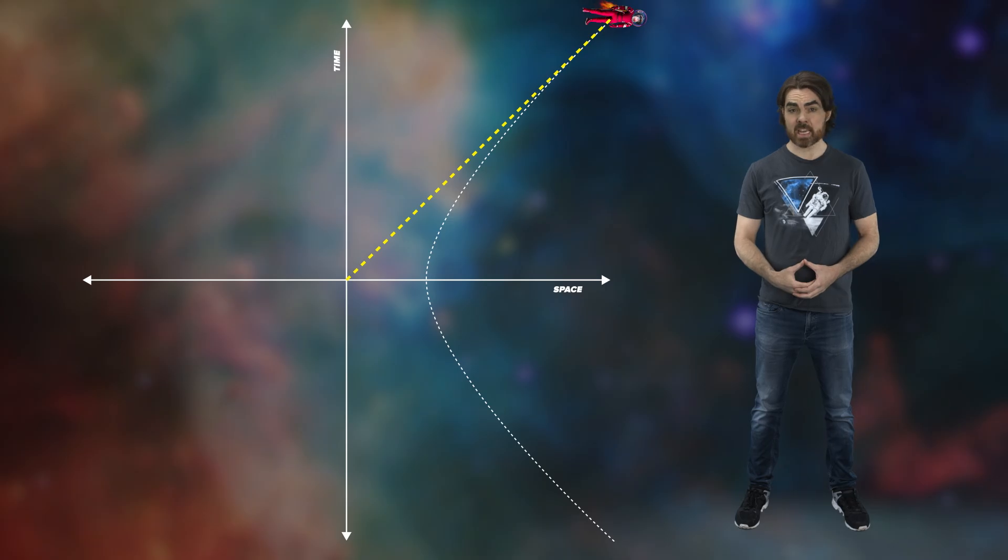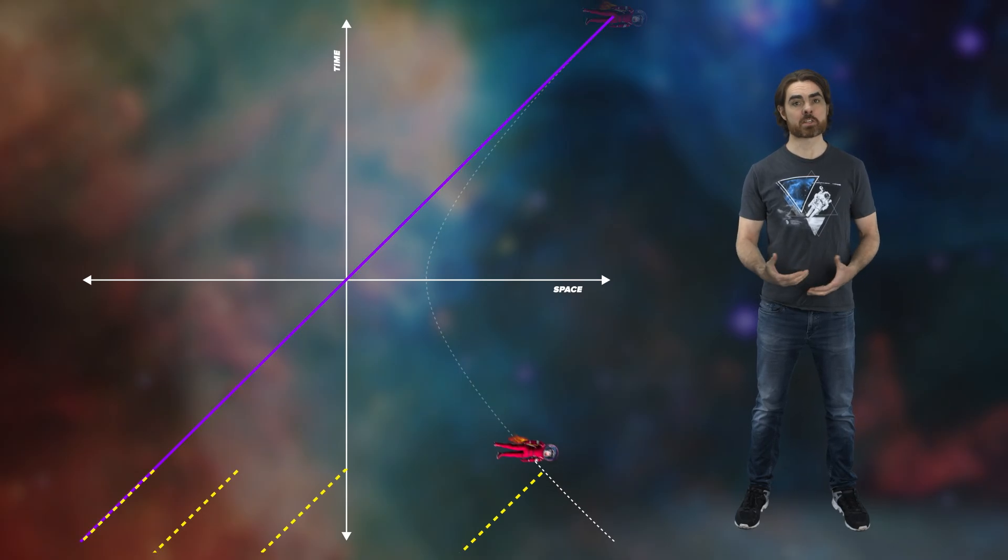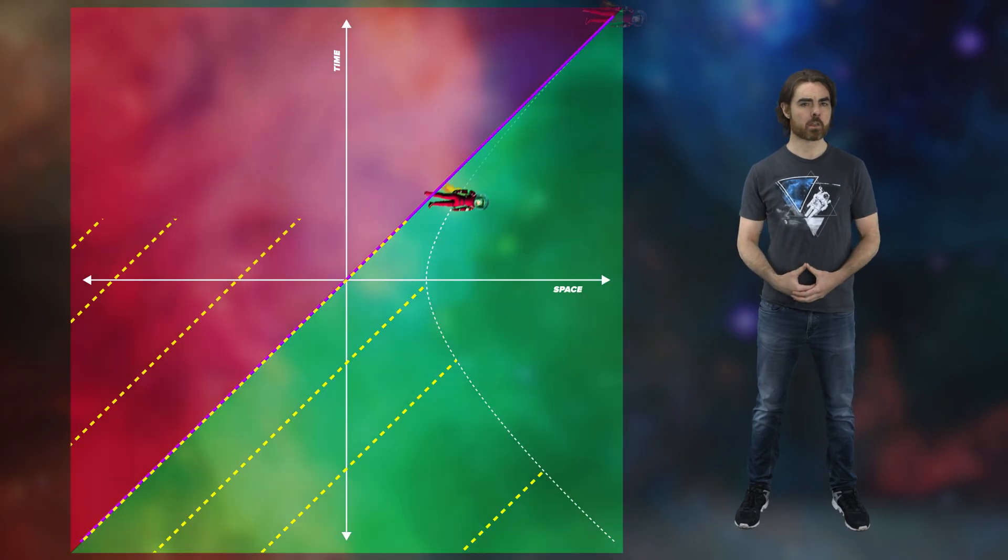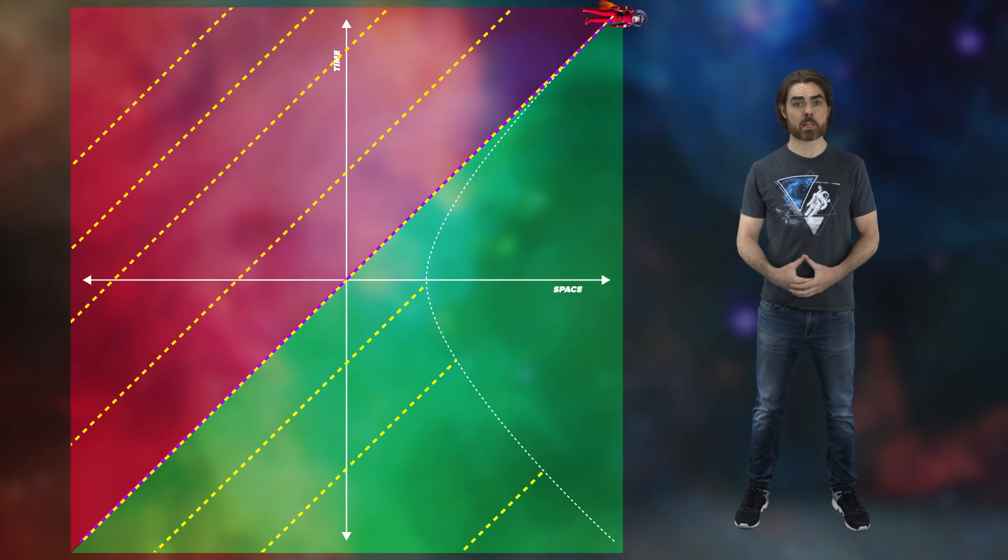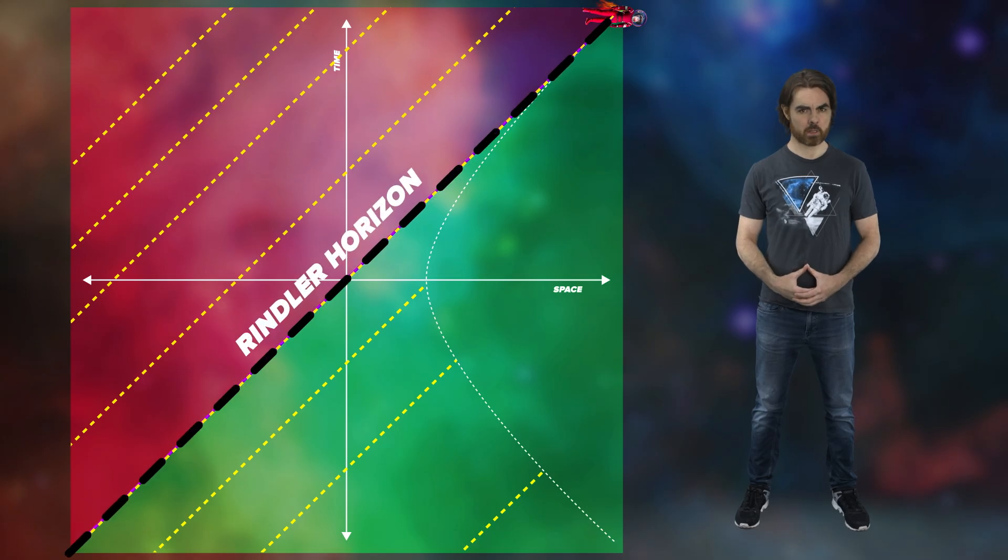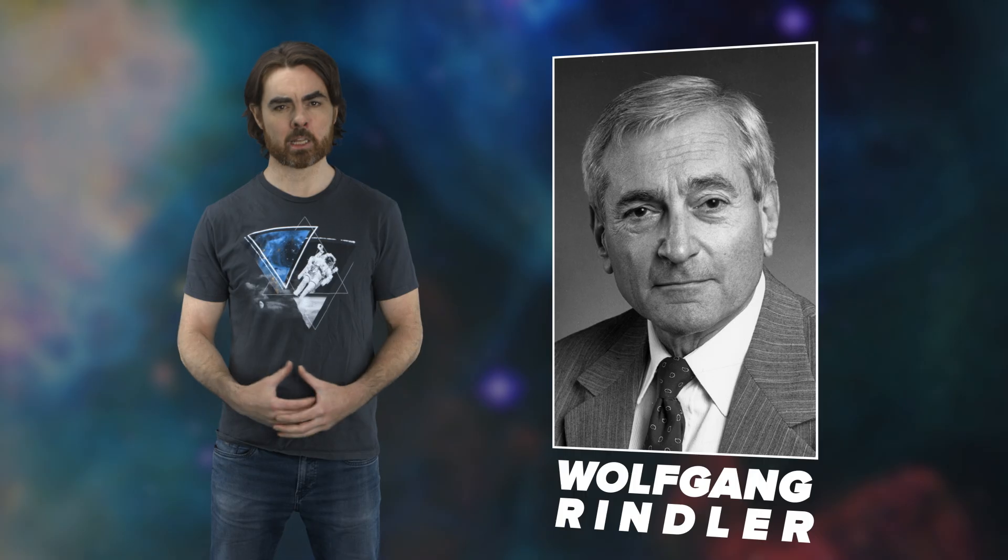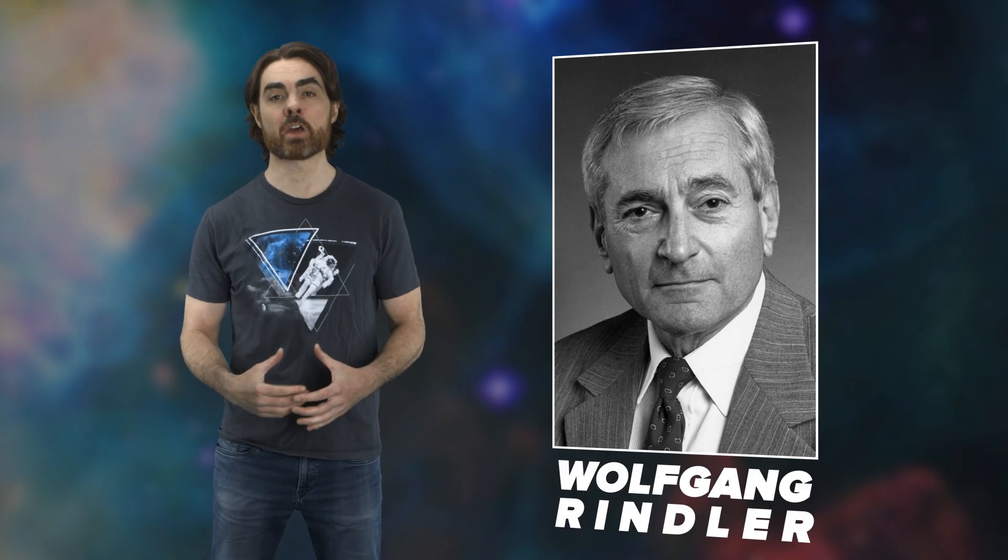But until that happens, they stay just ahead of my photon. They also stay ahead of any photon emitted from this diagonal line or any point on the other side of it. This means that any events happening to the left of that diagonal line will never affect the accelerating observer, which sounds pretty horizon-like. In fact, the act of acceleration does create a type of event horizon called a Rindler horizon. It's named after the coordinate system we use to describe a constantly accelerating observer in special relativity, Rindler coordinates, devised by Austrian physicist Wolfgang Rindler, who, by the way, also invented the term event horizon.